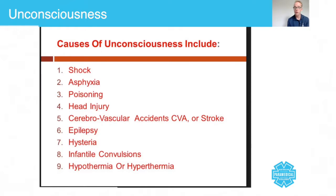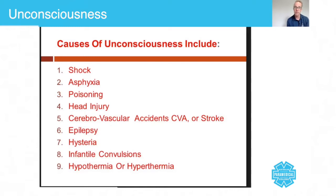Head injuries are a pretty big topic. With a head injury, for the force to cause unconsciousness, on many occasions there is an underlying condition in a traumatic brain injury, but not always. Cerebrovascular accidents, or a stroke, are caused by either a bleed or a blockage — a bleed is called a hemorrhagic stroke and a blockage is called an ischemic stroke. Epilepsy is a type of convulsion where the patient has been diagnosed as having abnormal electrical impulses in the brain, which cause full-body convulsions.